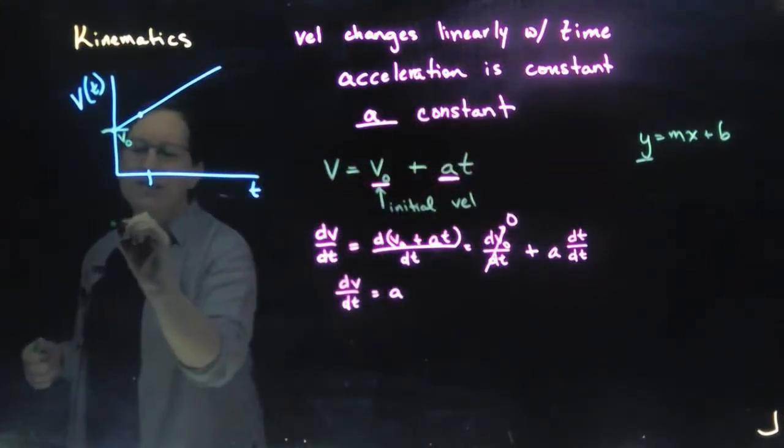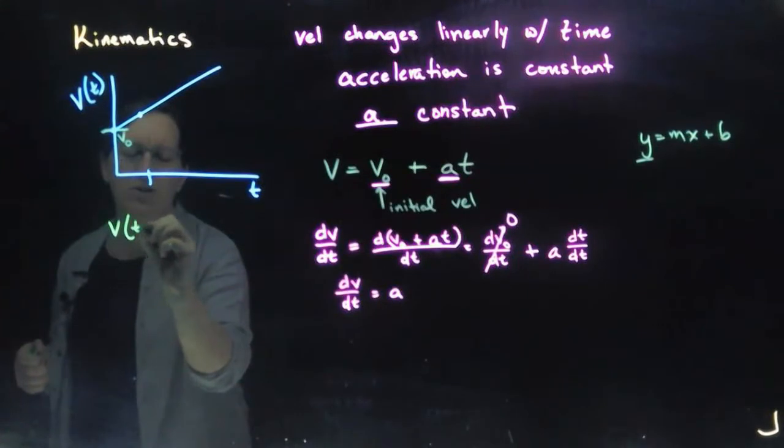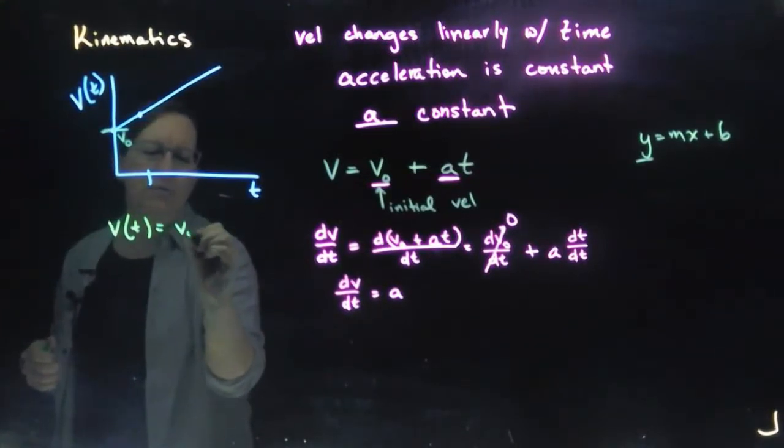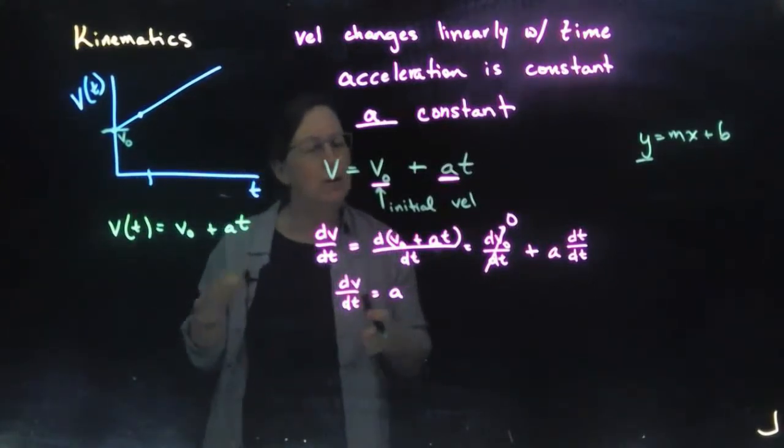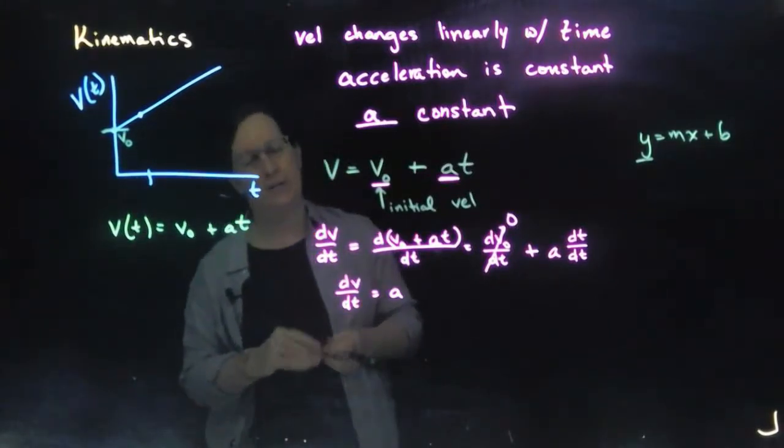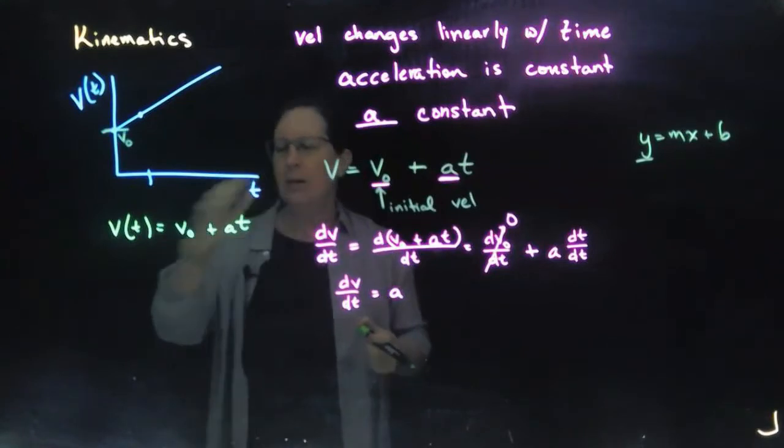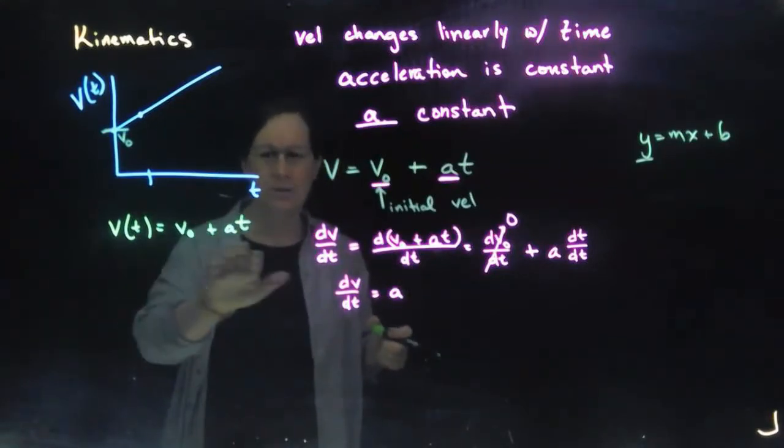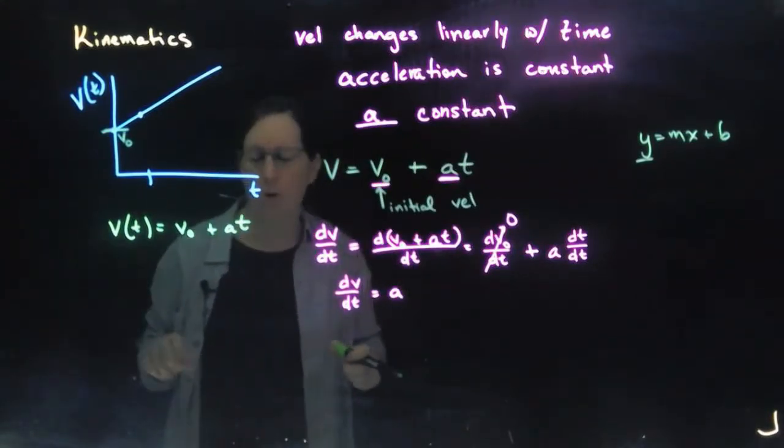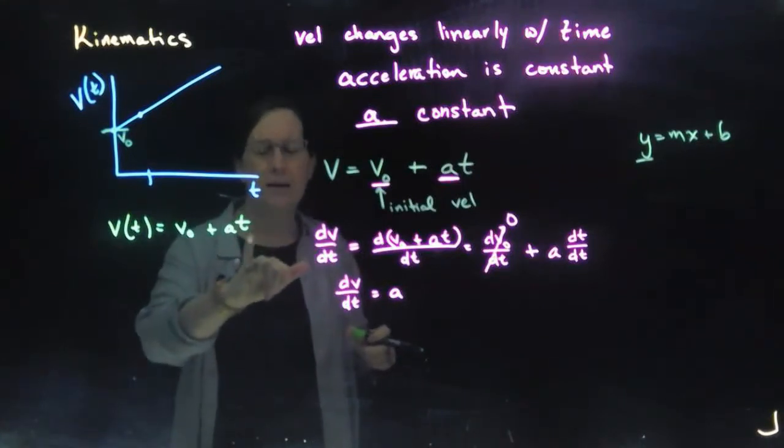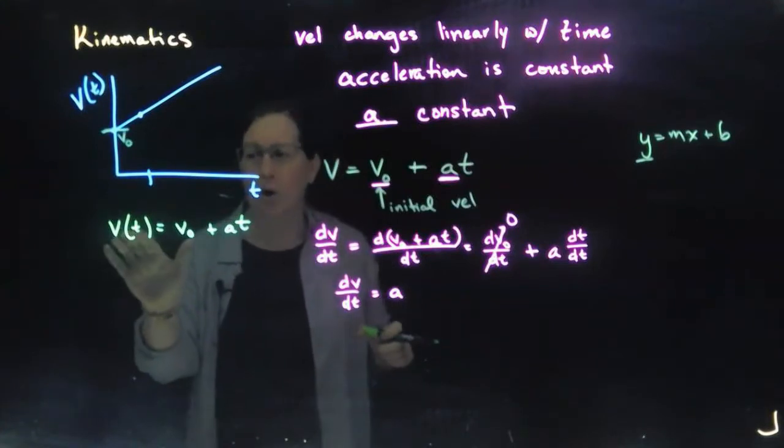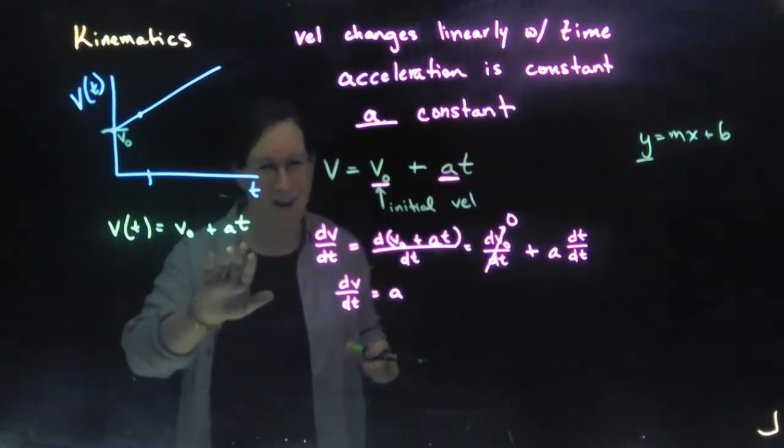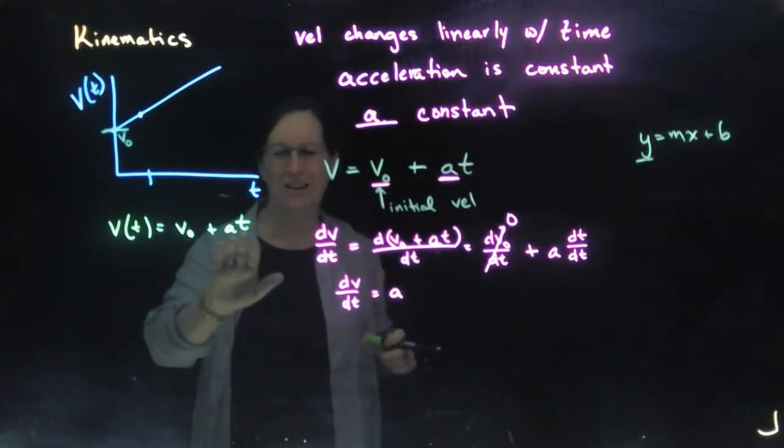So our equation is that v, as a function of time, is equal to v₀ plus at, and these types of equations are really powerful. I know you're thinking an equation, how is that powerful? Well, if you know this equation, if this is true of your motion, then all you have to say is, at what time, how fast is something going to be going? I mean, if hurricanes were governed by this equation, unfortunately, they're not. They don't have a constant acceleration.